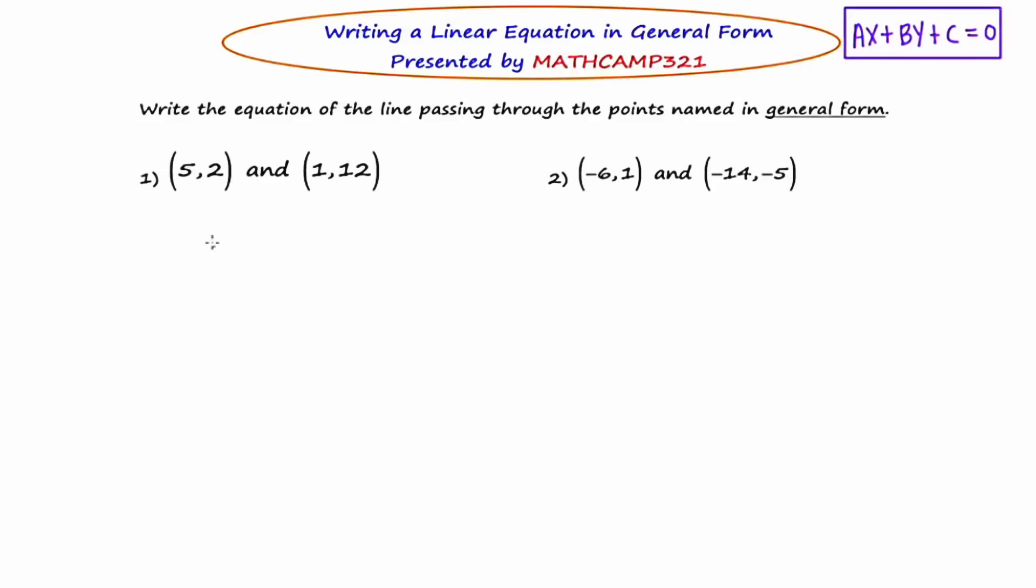Let's start by finding the slope. The slope is the change in Y over the change in X. So I'm going to say m equals 12 minus 2 over 1 minus 5. This simplifies to 10 over negative 4, which simplifies to negative 5 halves.